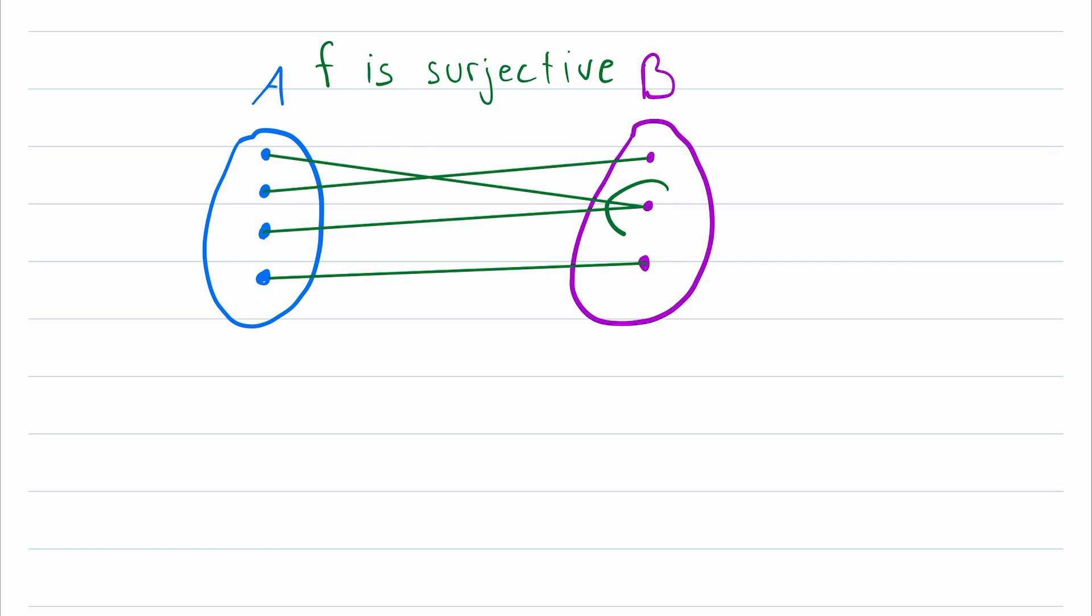You might also notice that this element is getting mapped to by two elements of the domain. This is perfectly okay in a surjective function but it's not okay in a type of function that's called an injection. And if you're not familiar with those I'd recommend checking out my lesson on the topic. I'll leave a link in the description. But again for a surjective function it's totally fine if multiple domain elements map to the same element of the codomain.